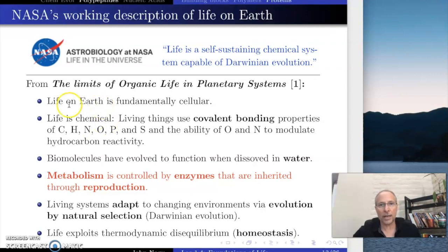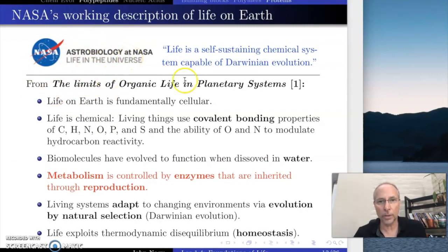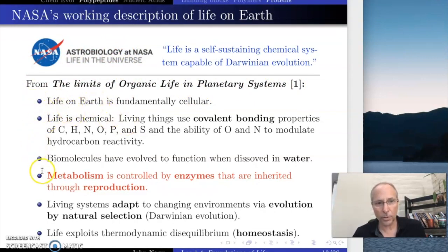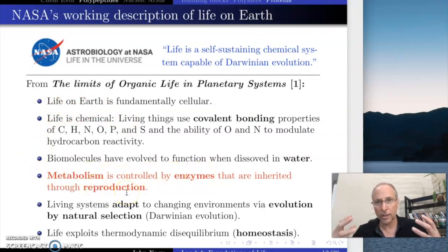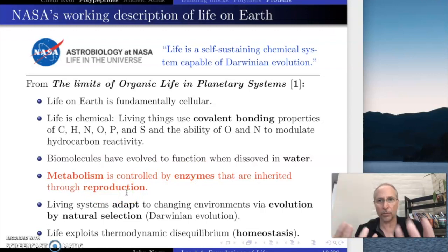Going back to the astrobiology description of life on earth — metabolism is controlled by enzymes that are inherited through reproduction. So this combines two concepts, metabolism and reproduction, both of which are controlled by enzymes. The definition of an enzyme is a protein that acts as a catalyst — that's the simplest definition you're ever going to get out of this class. An enzyme is a protein catalyst.